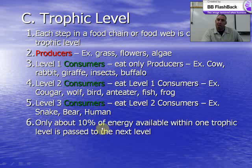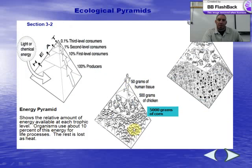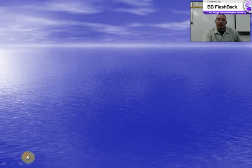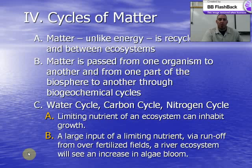Only about 10% of the energy available at one trophic level is passed on to the next — 90% is lost as heat. If you have 100 units at the bottom, you only get 10% available at the next level. All energy for our planet starts photosynthetically with producers, and only 10% gets passed on through to the top — we're not very efficient with energy.